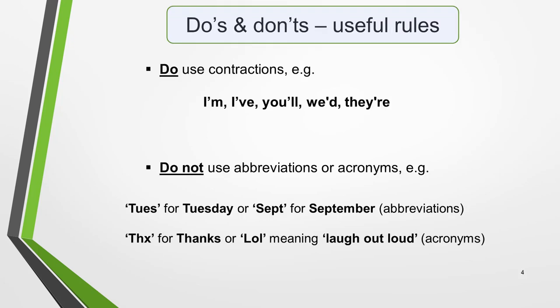Now for some useful rules. Do use contractions. Contractions are the easiest way to show the examiner that you know you are writing an informal letter. For example, use: I'm, I've, you'll, we'd, they're.